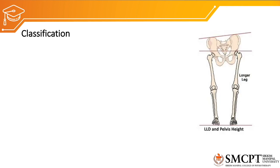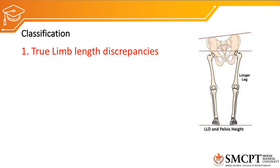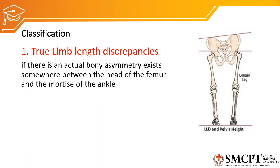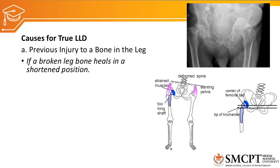Limb length discrepancy is classified into true and functional types. True limb length discrepancy occurs when there is actual bony asymmetry — for example, if the femur on one side is shorter than on the other side, or the tibia on one side differs in length from the other. Some causes for true limb length discrepancy include previous bone injury such as a fracture: after a fracture, if the bone heals in a certain position, it can cause limb length discrepancy.